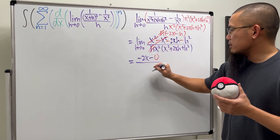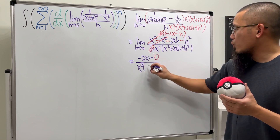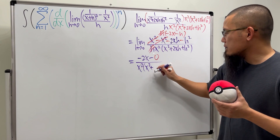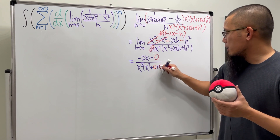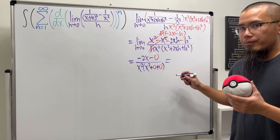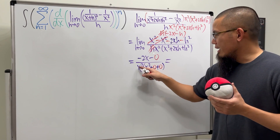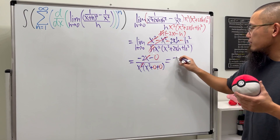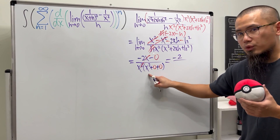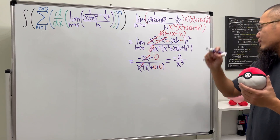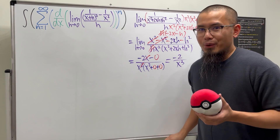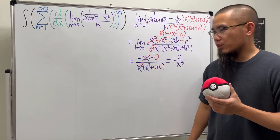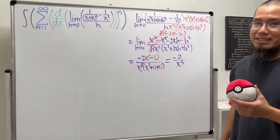We can now plug in zero for all h. We will have negative 2x minus 0 over x squared times x squared, and then the remaining h terms become zero. So we get negative 2x over x to the fourth. One x cancels, giving us negative 2 over x cubed. And of course, if you use the power rule to differentiate 1 over x squared, you also get that.